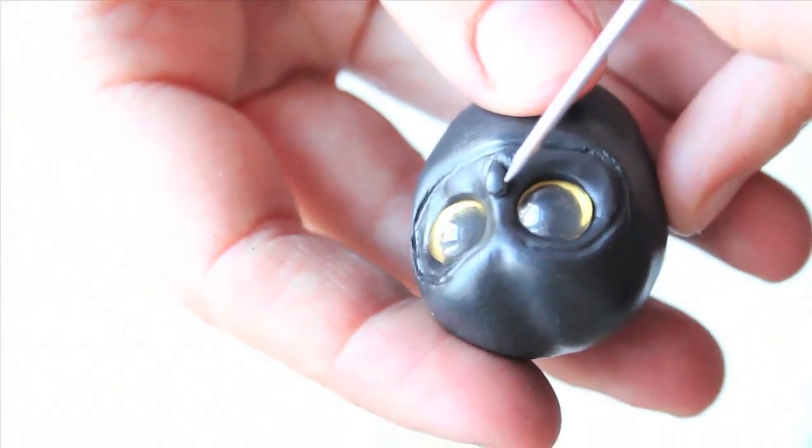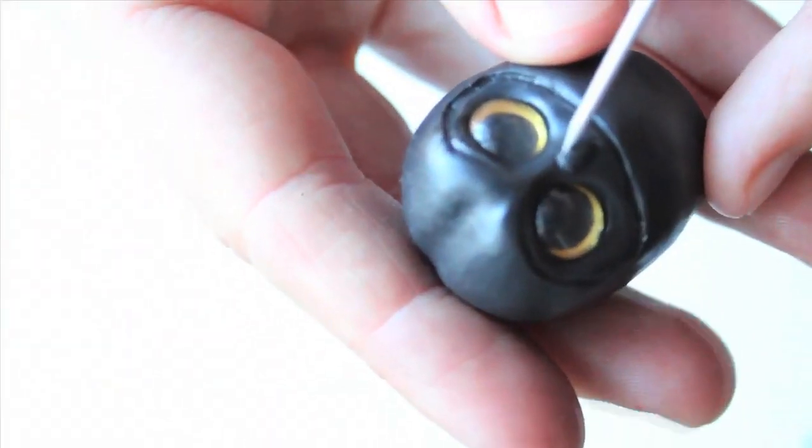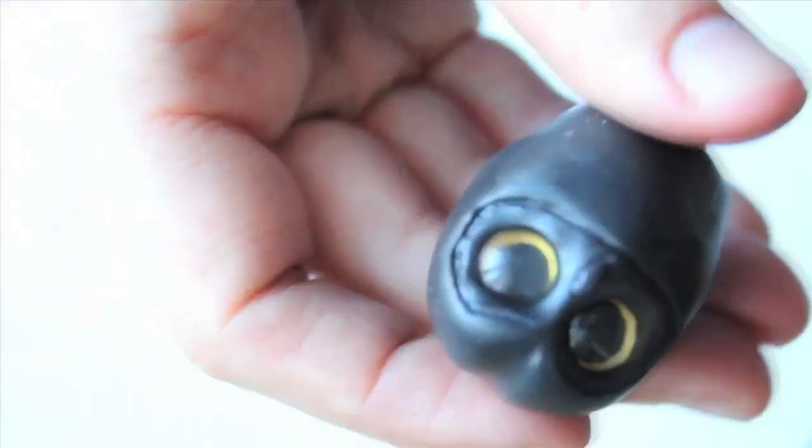Now let's make a little sharp owl's beak and attach it where it belongs. Help yourself with a needle tool or a rubber shaper to attach it correctly.